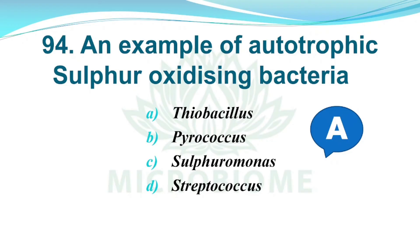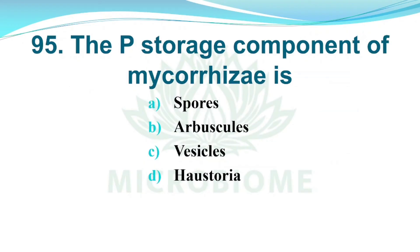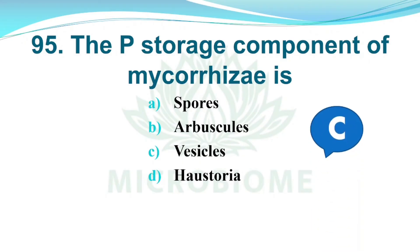And next, the phosphorus storage component of mycorrhizae is. Options: A) Spores, B) Arbuscules, C) Vesicles, D) Haustoria. The right answer is Option C, Vesicles.